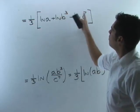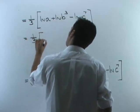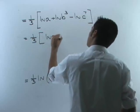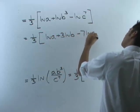Now I'm going to pull any powers I can out. So one-third here. Natural log of a I can't do anything with. Plus three natural log of b minus seven natural log of c.